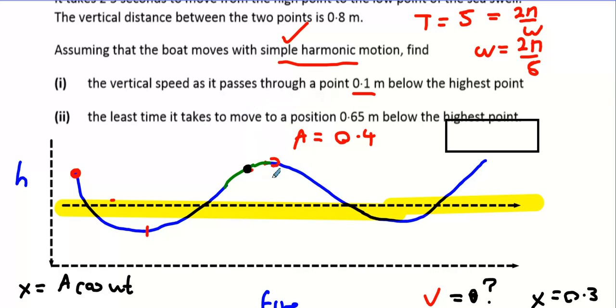If you imagine my starting point to be around here, I'd say, so my starting point would be here at the top. I go down 0.4 and then I have to go down another 0.25 underneath to be 0.65 away from the top.